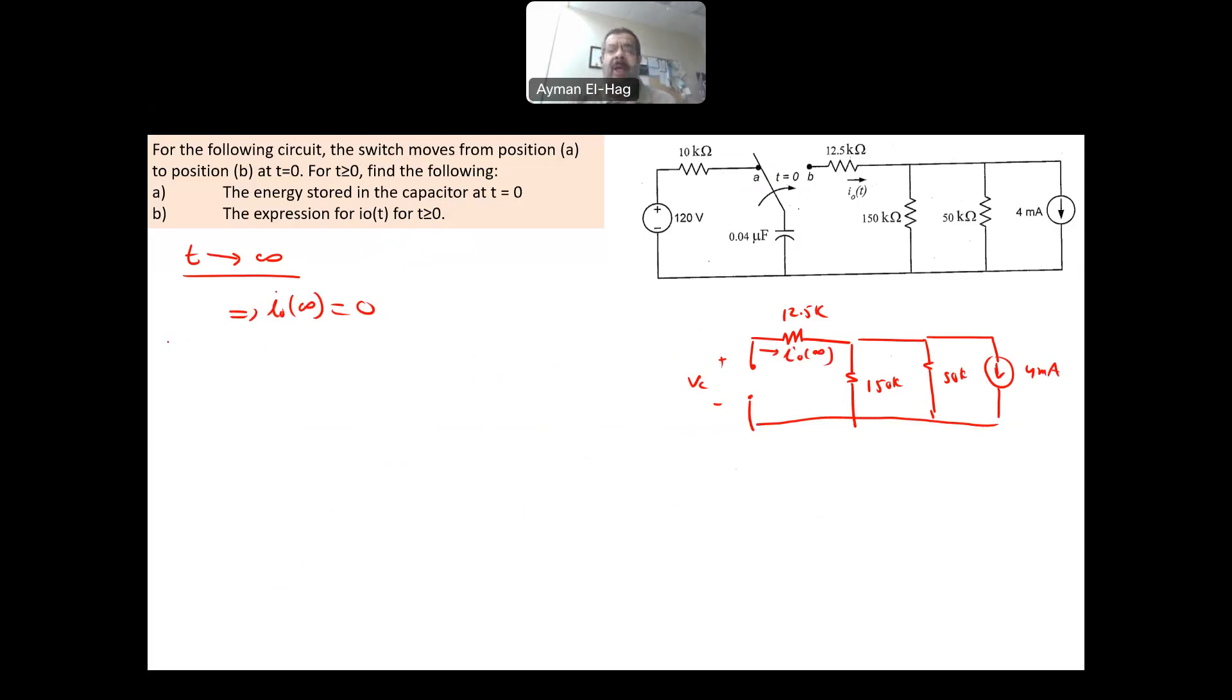Now, we need to find the time constant. To find the time constant, we need to find what is Rth in between these two points. We have only independent sources. This is a current source. So we just kill it by converting this as an open circuit. This will be my circuit now: 50 kilo, 150 kilo, and 12.5 kilo. Your Rth is basically equal to 12.5 kilo in series with 150 kilo in parallel with the 50 kilo. And you will find that the total resistance is equal to 50 kilo ohm.